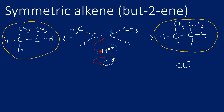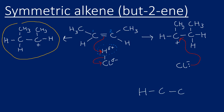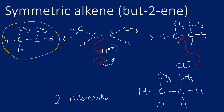With a symmetrical alkene you only get one carbocation because both are the same, so there's no need to distinguish a major and a minor product — both products are identical. To finish the mechanism, the pair of electrons on the chlorine forms a bond with the carbocation carbon. The final product is 2-chlorobutane. We've simply added HCl across the double bond.